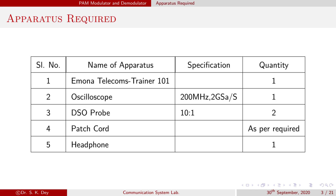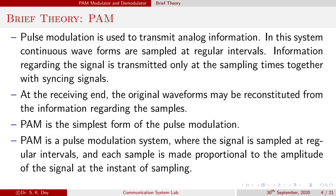These are the apparatus required to perform this experiment. Pulse modulation is used to transmit analog information in this system. Continuous waveforms are sampled at regular intervals. Information regarding the signal is transmitted only at the sample times together with a syncing signal. At the receiver end, the original waveform may be reconstructed from the information regarding the samples.